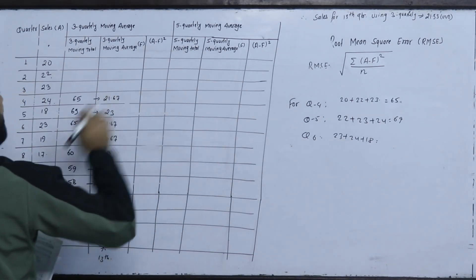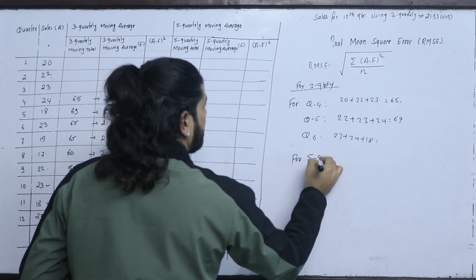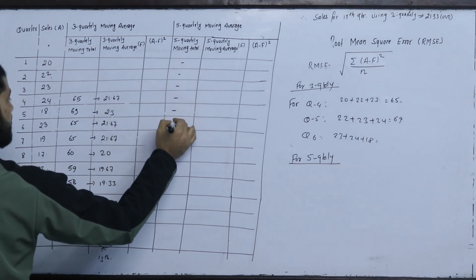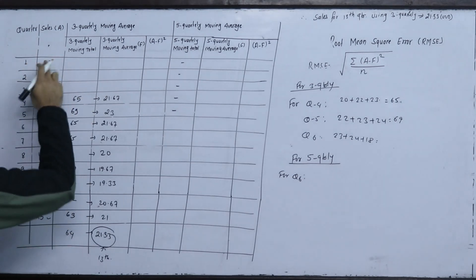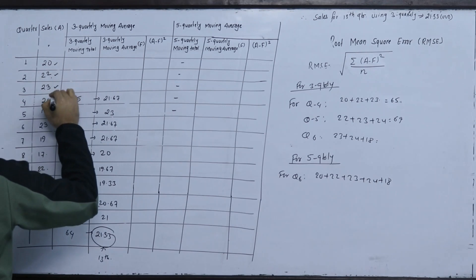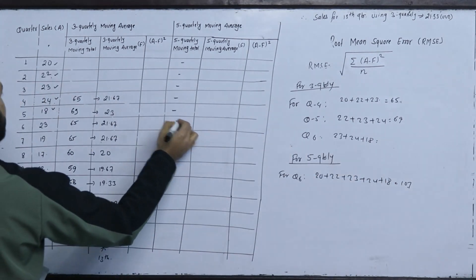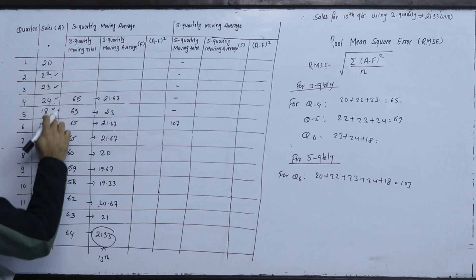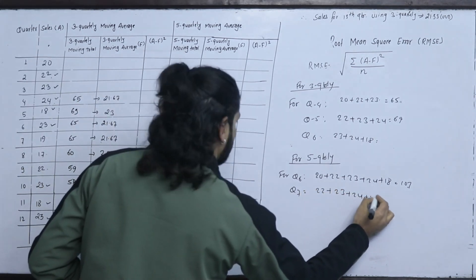Now for the 5-quarterly moving average: we take the second, third, fourth, and fifth quarters for Q6. The first 5-quarterly total: 20 plus 22 plus 23 plus 24 plus 18, counting 1, 2, 3, 4, 5 values, equals 107.